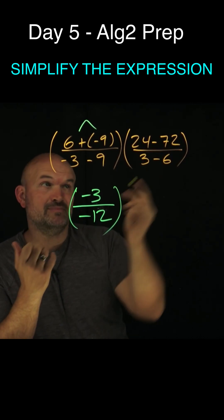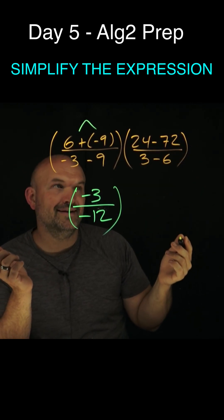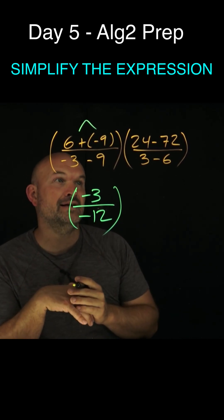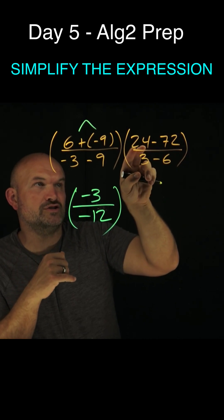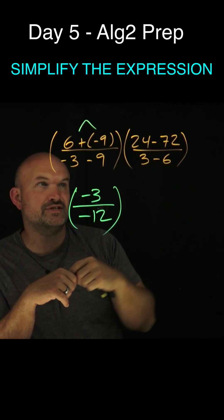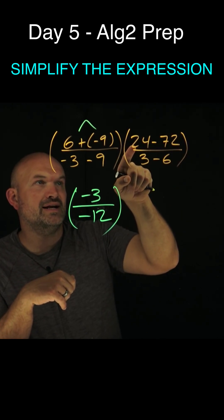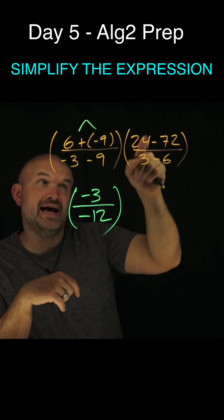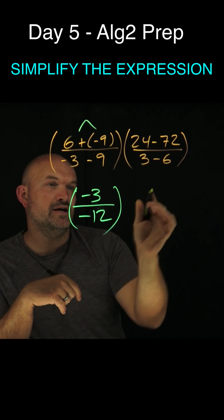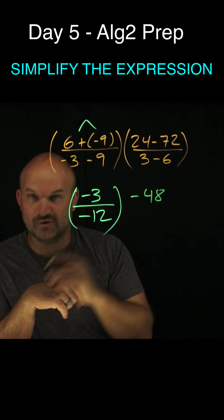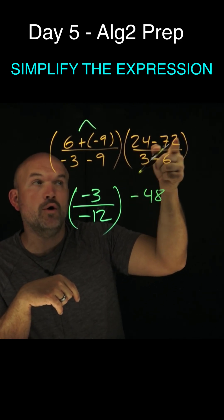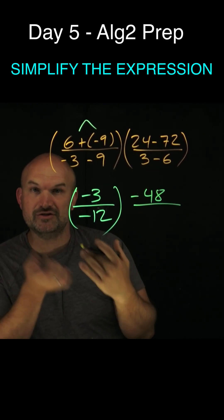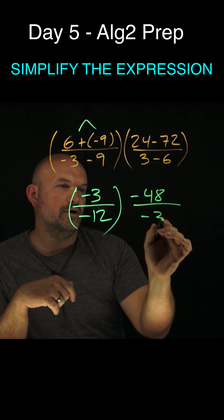Over here I have 24 but now I'm borrowing 72. Think of it like: 24 plus 4 gives me 28, then adding 8 gives 36 — wait, 24 plus 4 is 28, plus 8 is 36... 24 plus 48 gives 72. So that's a negative 48, because you owe 72 from the original 24. And here I have three minus six — you have three dollars, you borrow six, you now owe me three dollars.